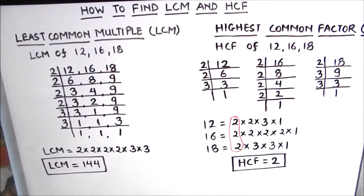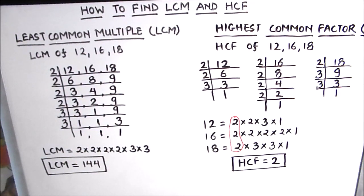So this is how we find the LCM — least common multiple — and HCF — highest common factor — of numbers. I hope this video is helpful to you. If you like the video please hit the like button and subscribe to my channel for more math videos. Thanks for watching.